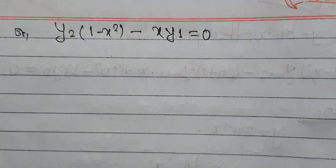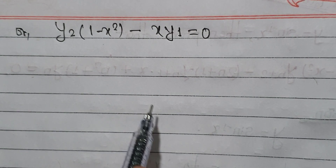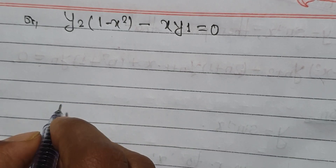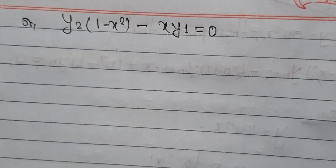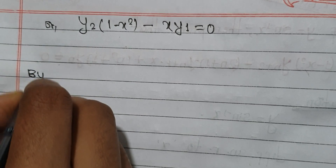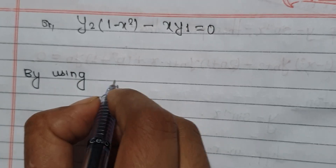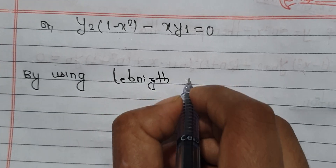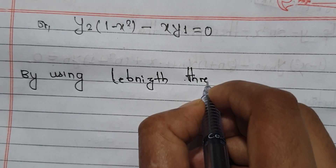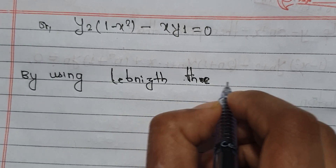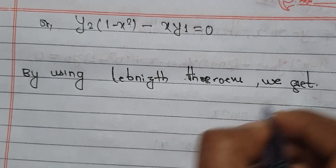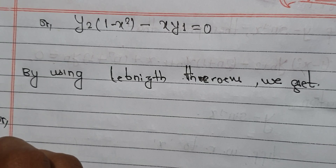This form is the double derivative. We write the same form on both sides. By using Leibniz's theorem we get — applying Leibniz's theorem, we get the standard form.